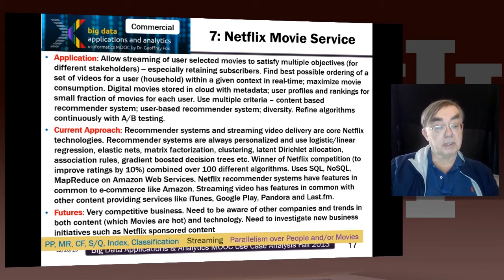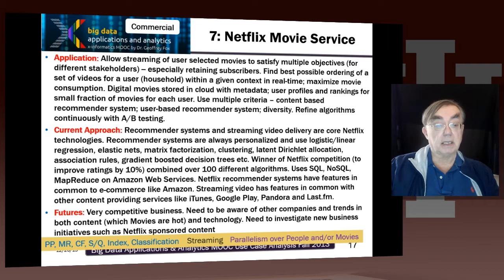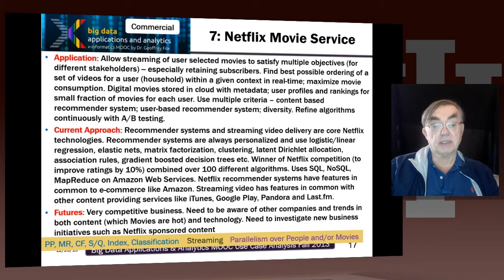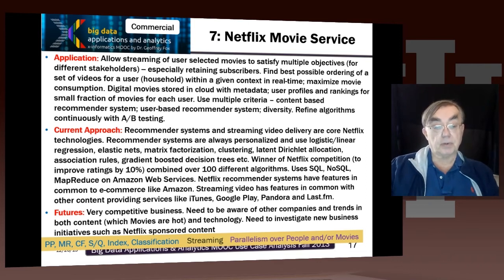The current approach is essentially built around recommender systems and streaming video. Those recommender systems are always personalized and use all sorts of sophisticated technologies: clustering, LDA, latent factor nets, ordinary regression, fancy machine learning things, gradient-boosted statistics, and gradient-boosted decision trees. There was a competition which Netflix held to improve the accuracy of ratings by 10%, and the winner actually combined a hundred different algorithms for the final answer.